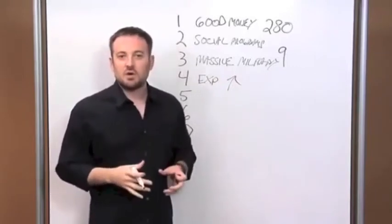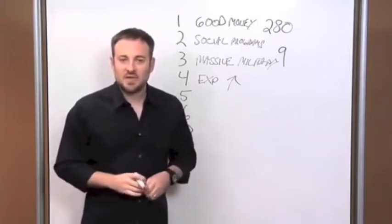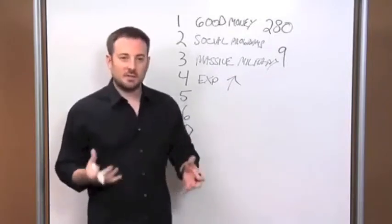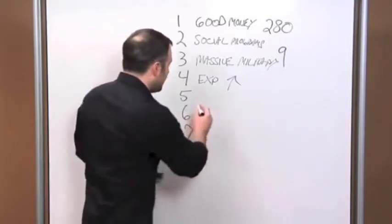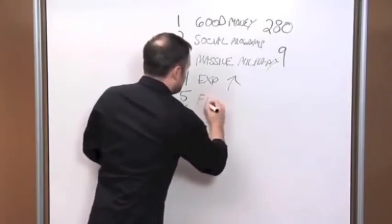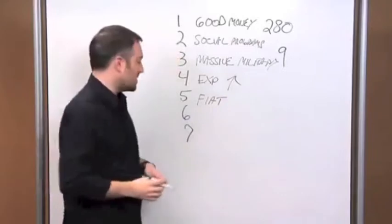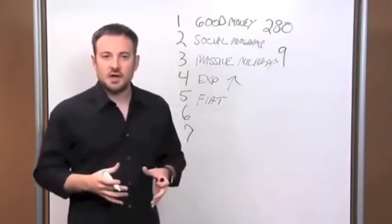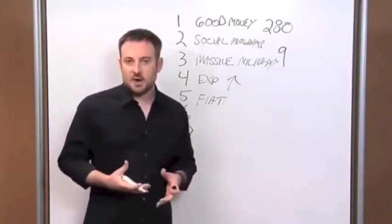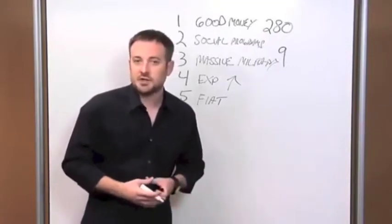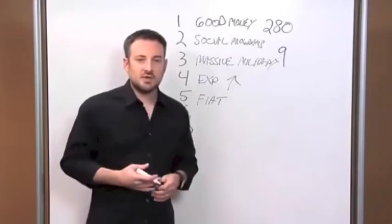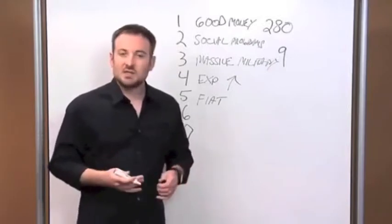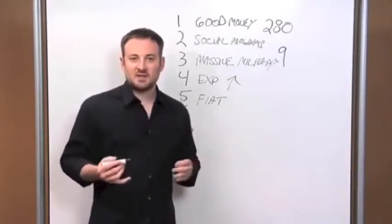That brings us to stage number five. To fund those wars, which are essentially the costliest of man's endeavors, it has to steal the wealth of its people by replacing their money with currency that can be created in unlimited quantities. For number five, let's put fiat, which essentially means money that is not backed by anything. It's just paper currency. Now, the United States went to a fiat currency and left the gold standard back in 1971 under President Nixon, and he did that to help pay for Vietnam.